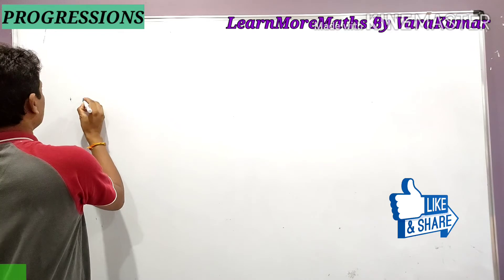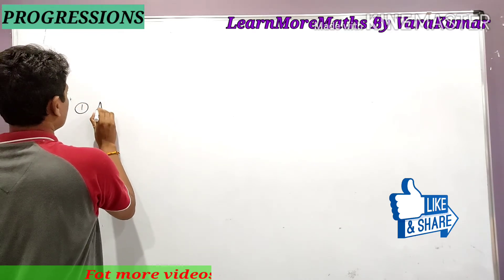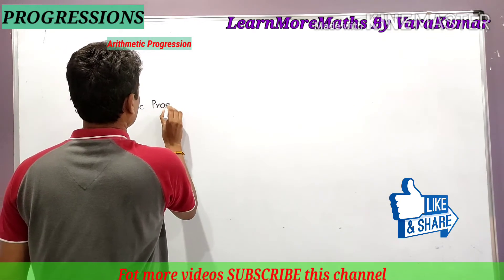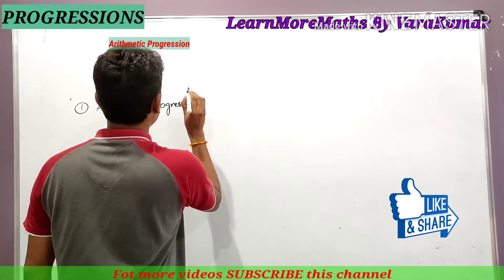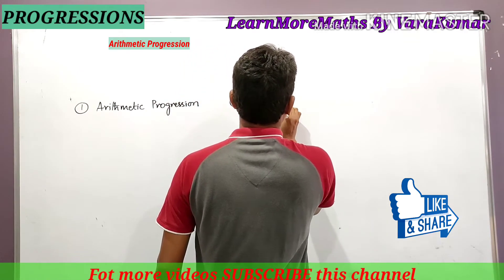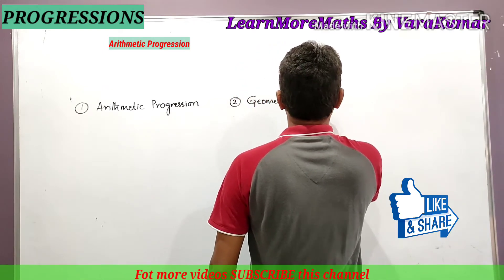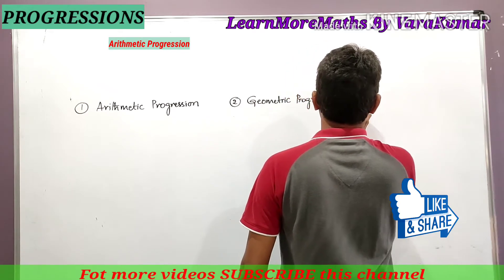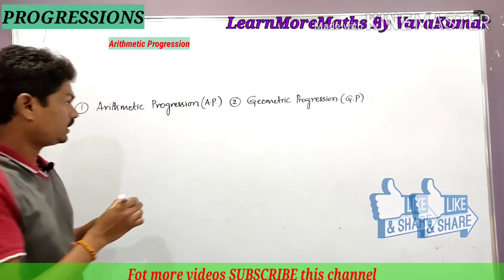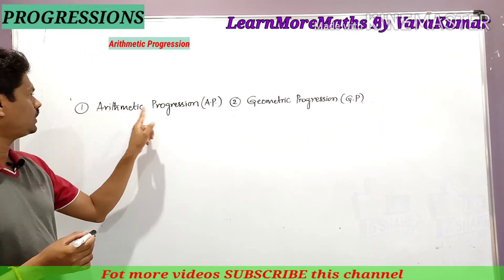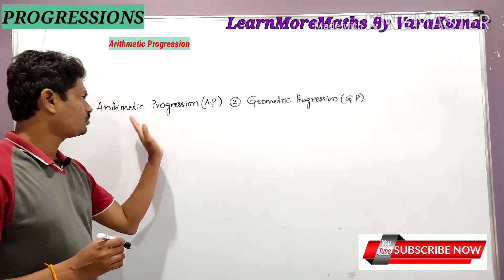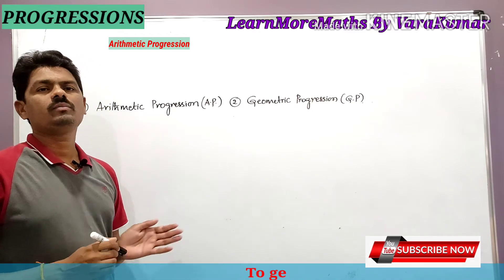In this chapter on progressions, we have two types: number one is Arithmetic Progression, and number two is Geometric Progression. Geometric Progression is denoted by GP, and Arithmetic Progression is denoted by AP — using their first letters as capital abbreviations. First, we will learn about Arithmetic Progression.